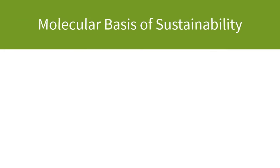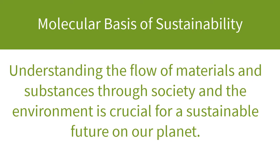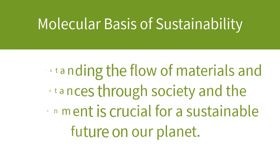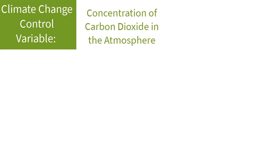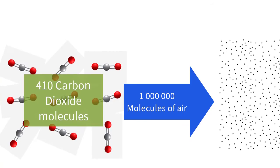We talk about the molecular or material basis of sustainability to show that understanding the flow of materials and substances through society and the environment is crucial to a sustainable future on our planet. Most of the control variables for the nine Earth systems are directly related to chemical processes and the measurement of chemical substances. For example, the control variable for climate change is the concentration of carbon dioxide in the atmosphere, which is currently at or around 410 parts per million — or 410 out of every million molecules of air are carbon dioxide molecules.